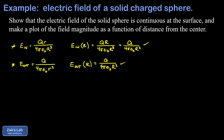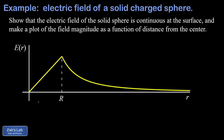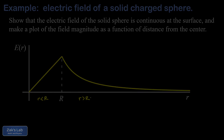Finally, the plot of electric field magnitude as a function of distance from the center shows linear growth for r < R (inside the sphere), reaching a maximum at the surface r = R (shown by the dotted line), then transitioning to the 1/r² point-charge behavior for r > R outside the sphere.